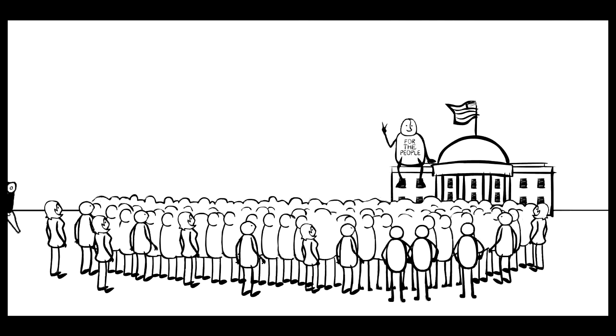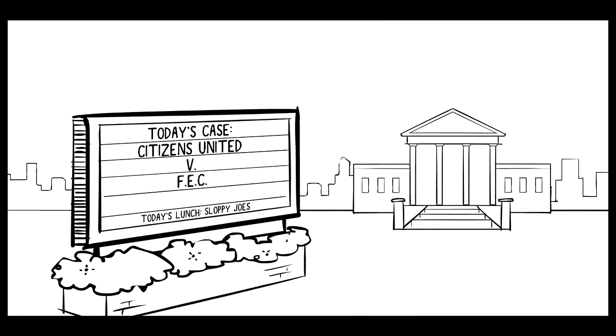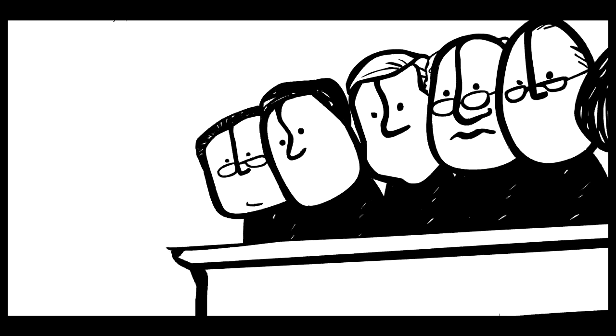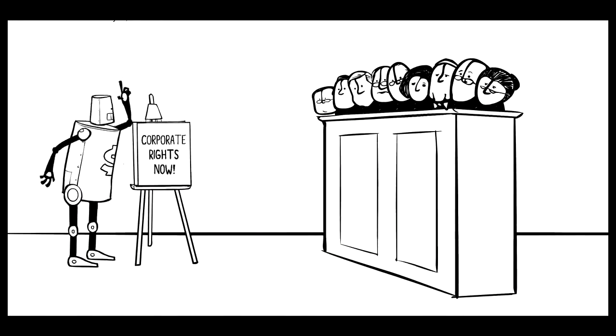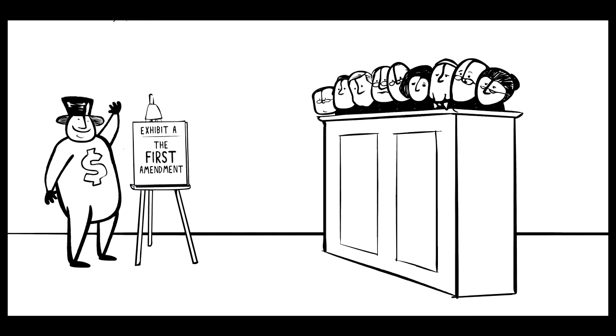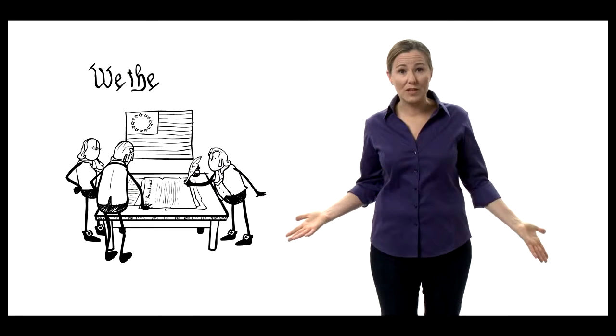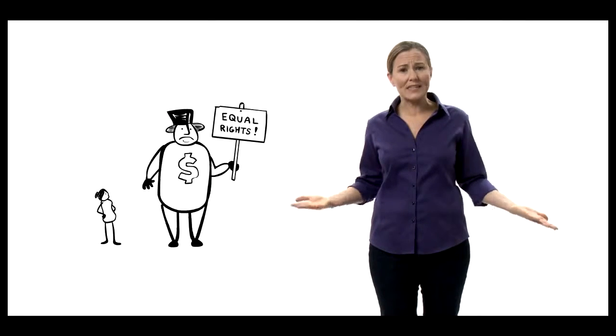That's why one of the corporations' key strategies for sneaking into our democracy is saying that they should have the same First Amendment rights as real, live people. And that's exactly how they won the 2010 Supreme Court case known as Citizens United vs. FEC. In that case, five members of the Supreme Court decided that it's unconstitutional to put any limits on how much money corporations can spend influencing elections. Why? They said these limits violate the First Amendment guaranteeing free speech.